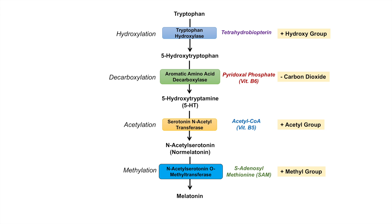Step four: N-acetyl serotonin O-methyltransferase performs a methylation, adding a methyl group to N-acetyl serotonin to form melatonin, requiring the cofactor S-adenosylmethionine (SAM) as the methyl group donor. Key takeaways from this pathway: we require vitamin B6 for serotonin and melatonin synthesis, vitamin B5 in the form of coenzyme A for melatonin synthesis, and methionine in the form of S-adenosylmethionine for melatonin production.